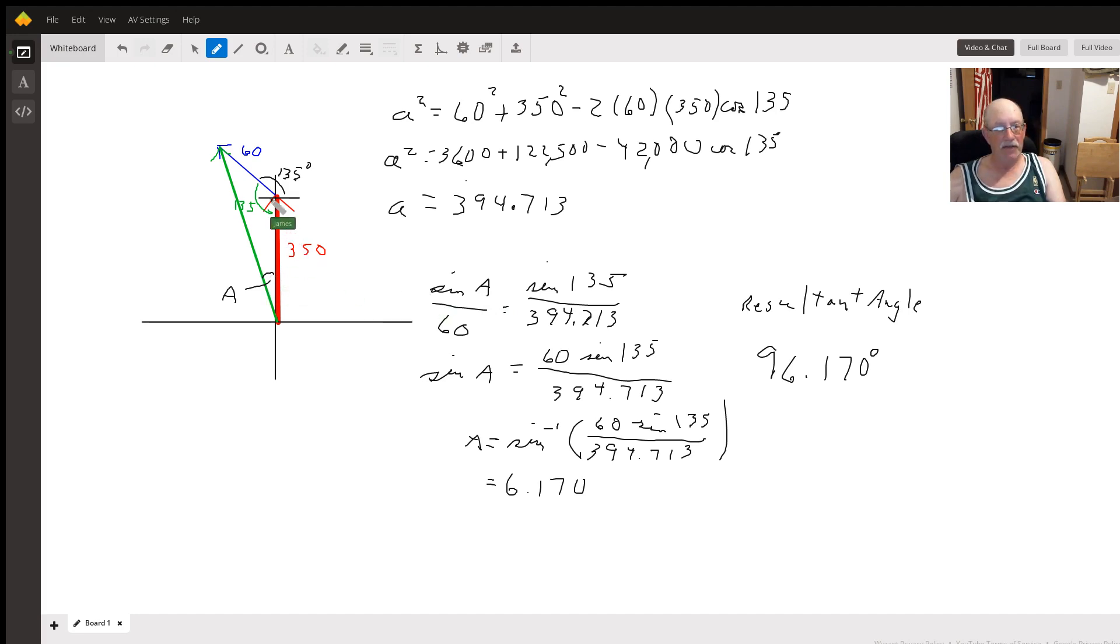So we've got the sine of A over the opposite side of 60, is going to equal the sine of 135 over the 394.713 that we found for the resultant.